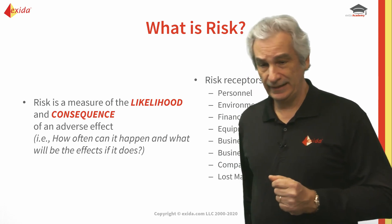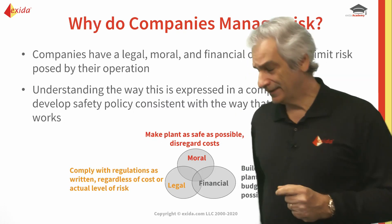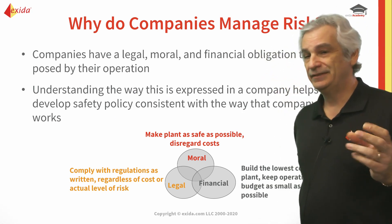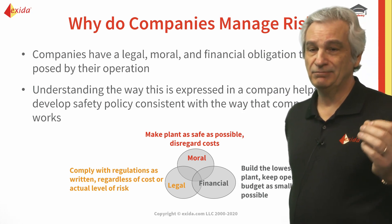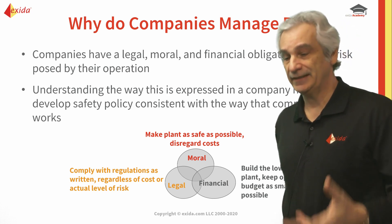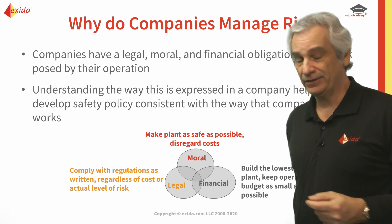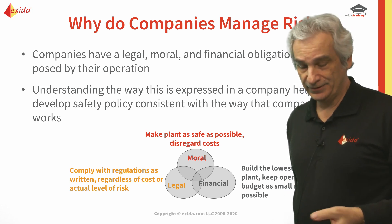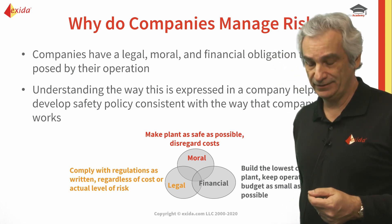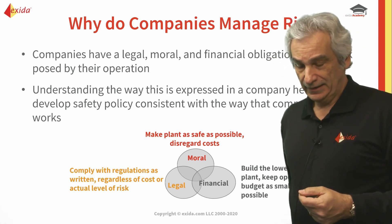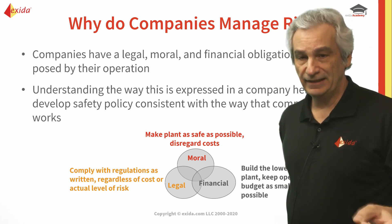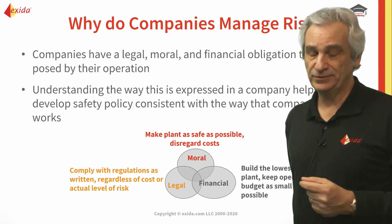Why do companies manage risk? They should be managing risk because they have not just a moral obligation — they should make the plant as safe as possible for its workers, and their standard of care should be as high as possible regardless of cost. There will also be a legal requirement because they may have to meet certain legislation or standards. And of course, there's the level of risk and who's exposed to that risk.